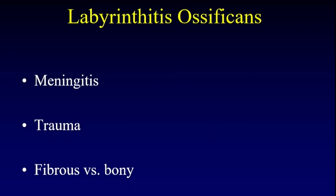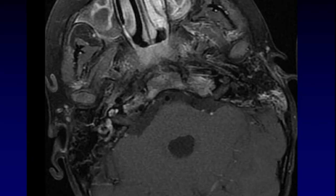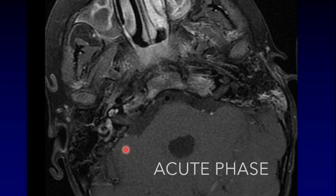Here's an example of an acute phase. We see that there are intact structures — the vestibule, the semicircular canals, the cochlea — but they're all abnormally enhancing on this post-contrast T1. This is the acute phase: the active inflammation within the labyrinth.